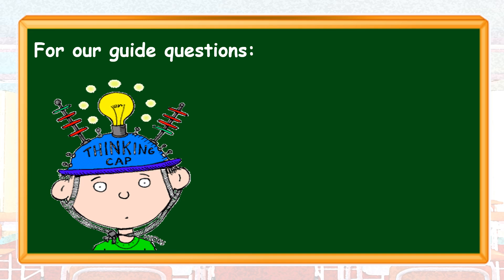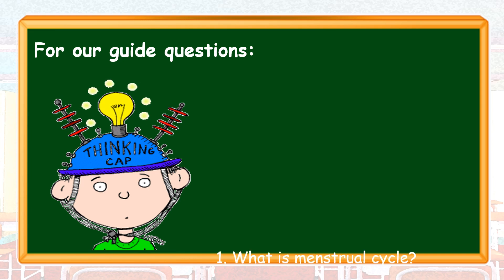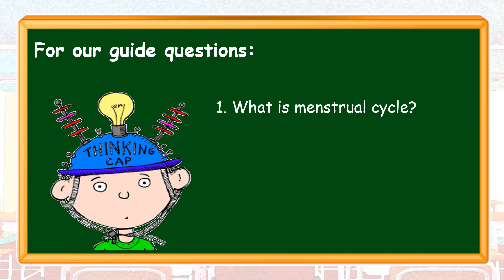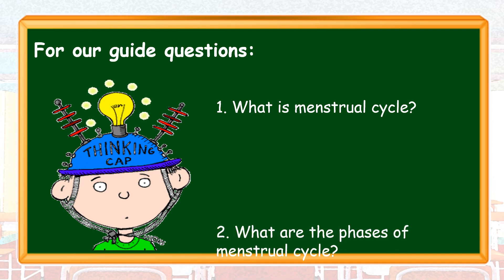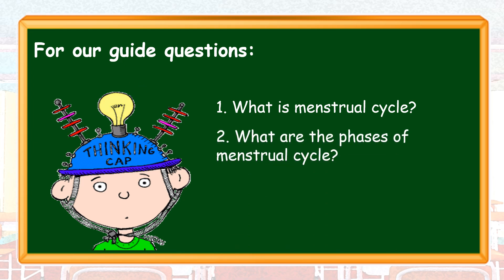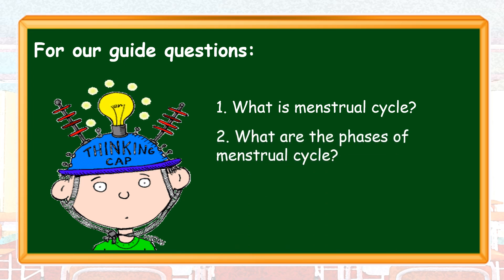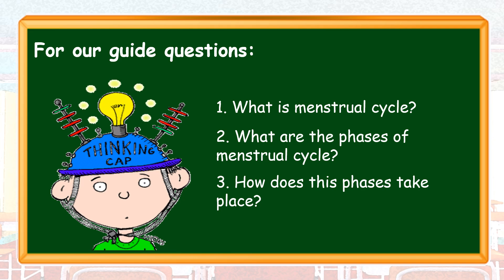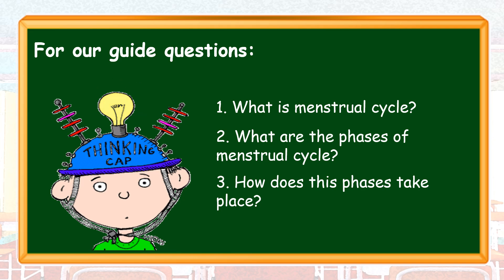For our guide questions: Number one, what is the Menstrual Cycle? Number two, what are the phases of the Menstrual Cycle? And number three, how do these phases take place?